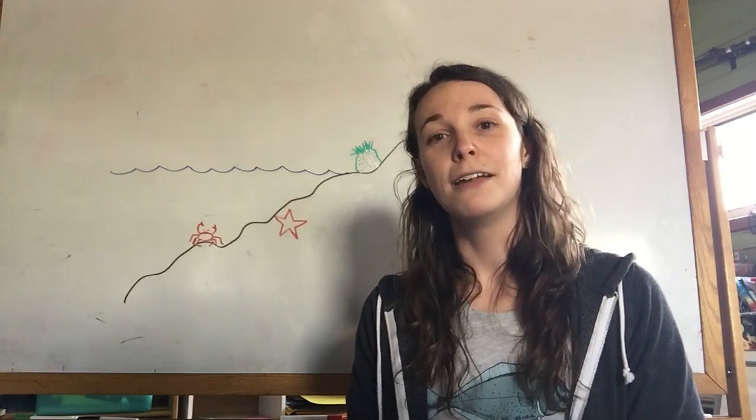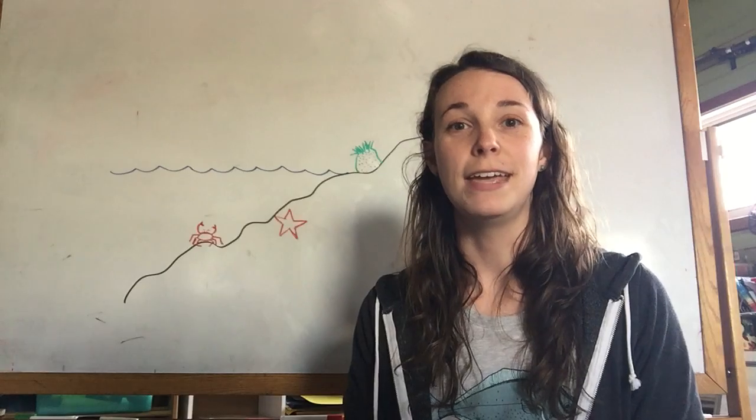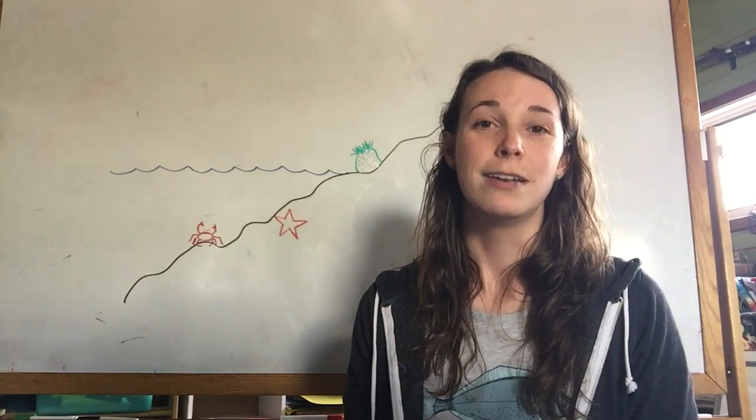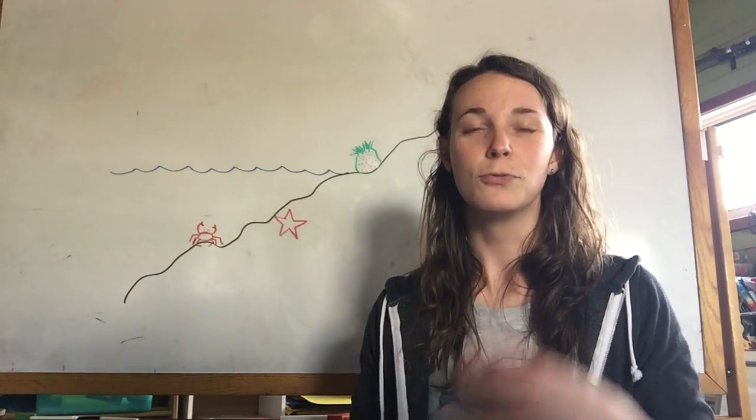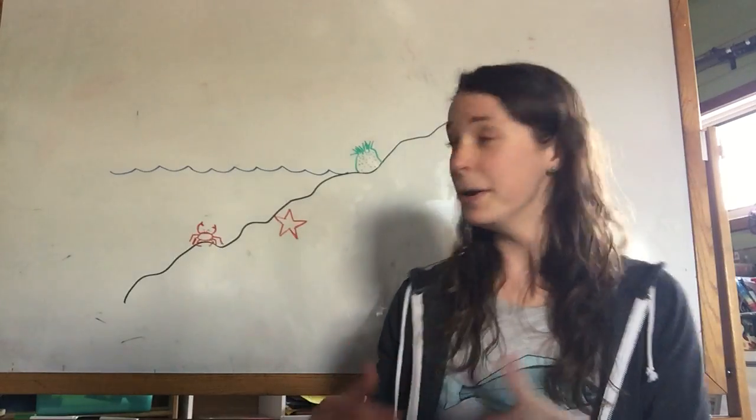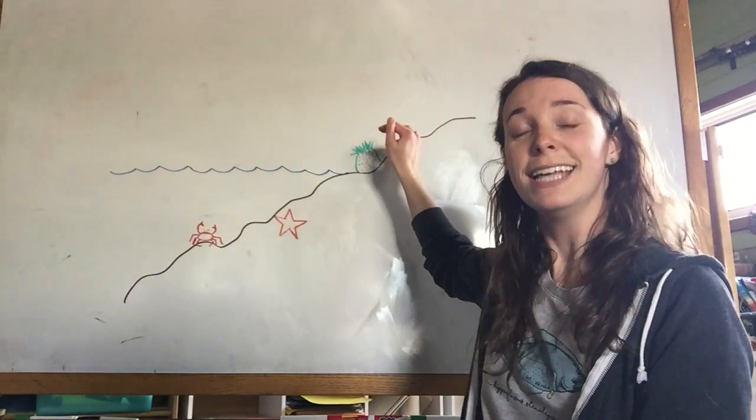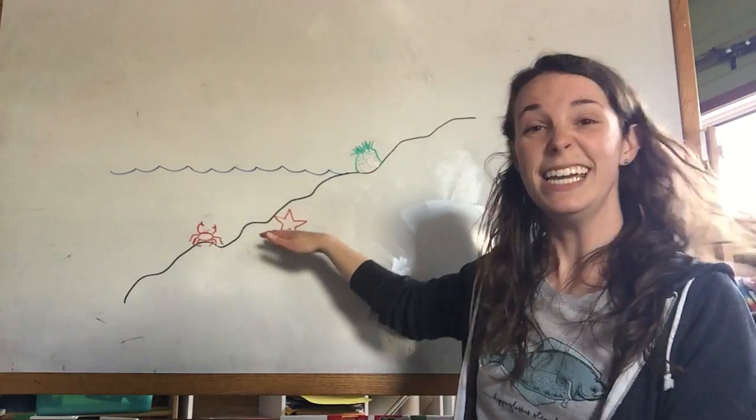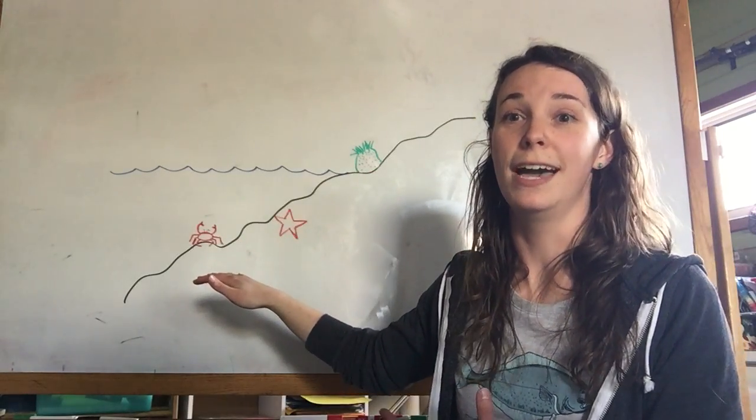Here in Homer, Alaska, a lot of the invertebrates that we have live in the intertidal zone, which means that they are in this really unique habitat that is sometimes covered by water when the tide rises and then they're left completely exposed when the water goes down during low tide.